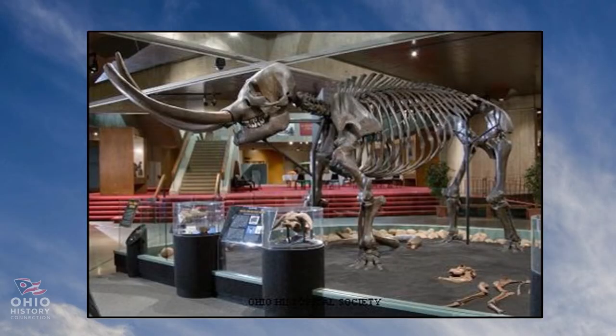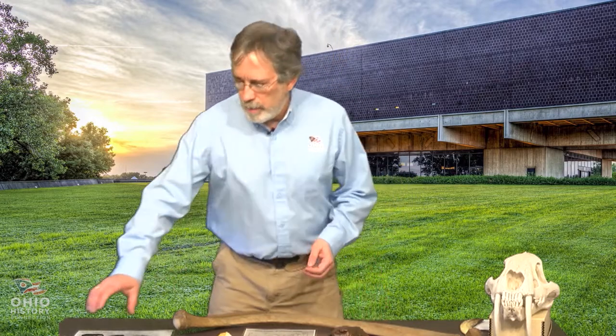We have more records of the mastodon in Ohio than we do for the woolly mammoth. If you come to our museum at the Ohio History Center, you'll see a complete full mounted skeleton of a mastodon. So we're going to look at a couple of different bones and teeth of these animals that lived here in the Ice Age, starting with the mastodon.